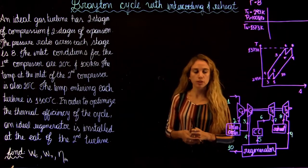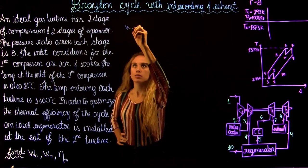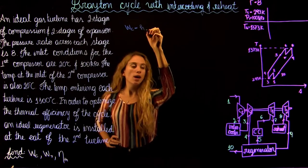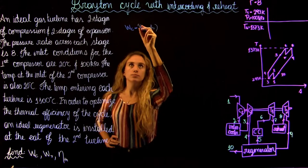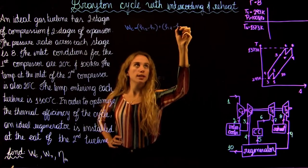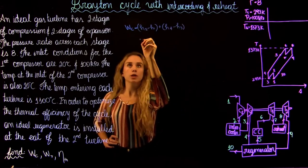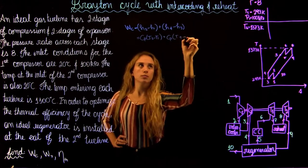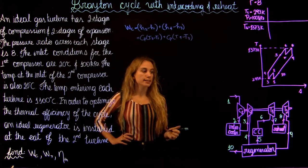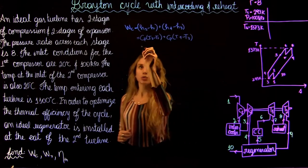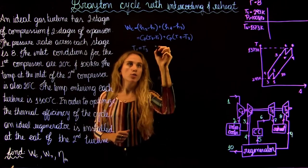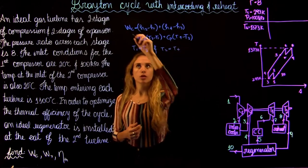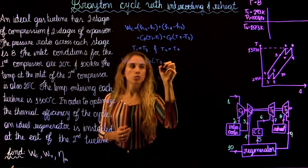Now let's write the equation for the work of both compressors. The total compressor work is the work of the first compressor plus the second one. In terms of enthalpy, it's H2 minus H1 plus H4 minus H3. In terms of temperature, it's Cp(T2 - T1) plus Cp(T4 - T3). Since the inlet temperature is the same — T1 equals T3 — and the pressure ratio is the same, T2 equals T4. So we can rewrite this as 2·Cp·(T2 - T1).